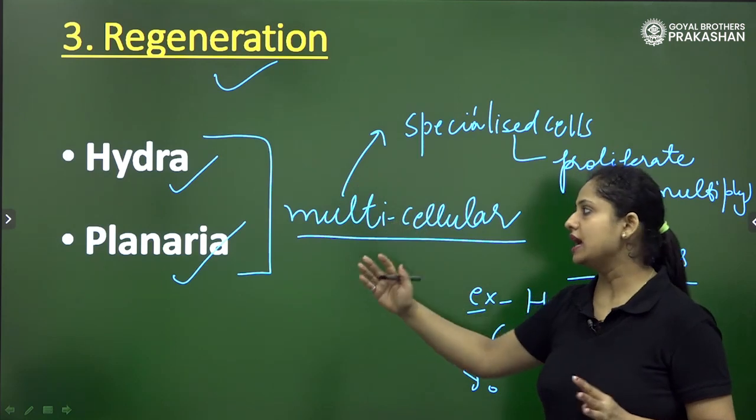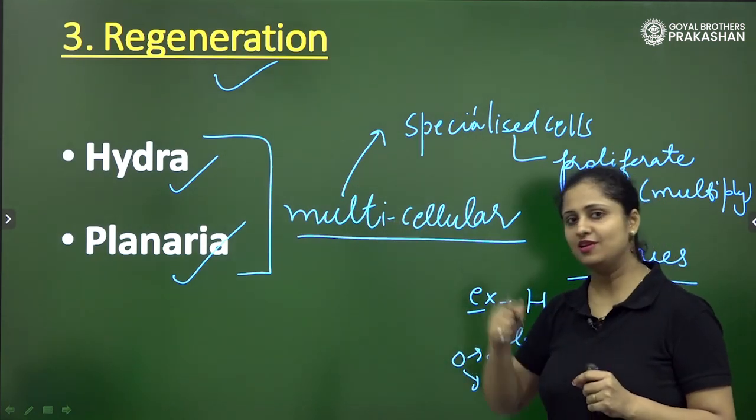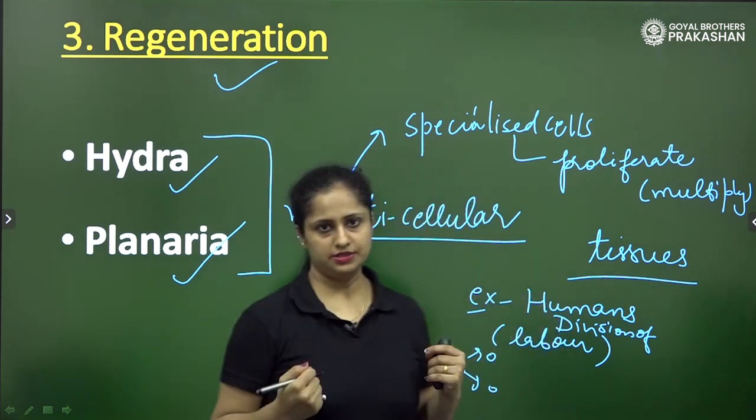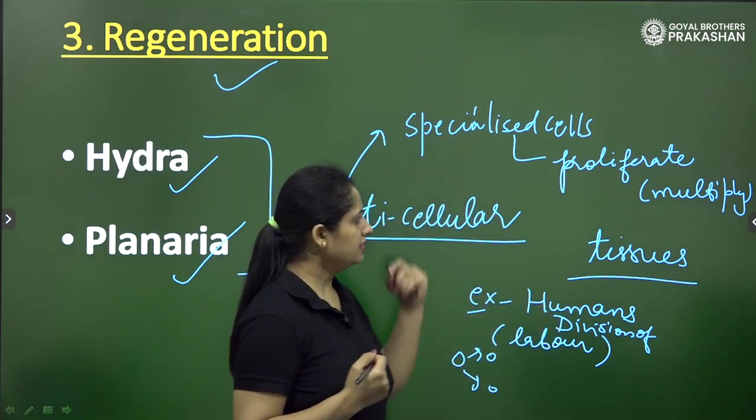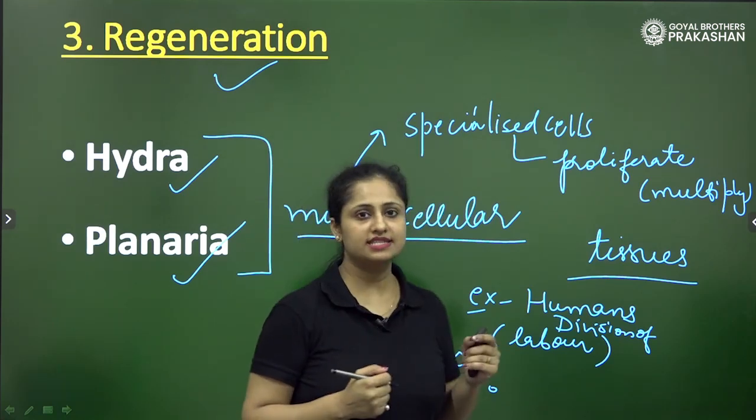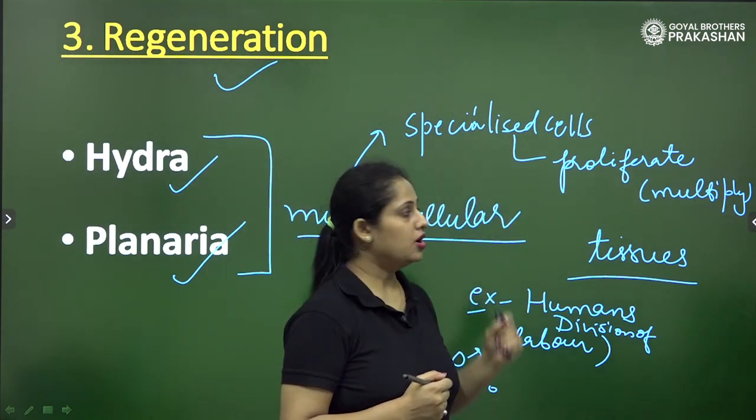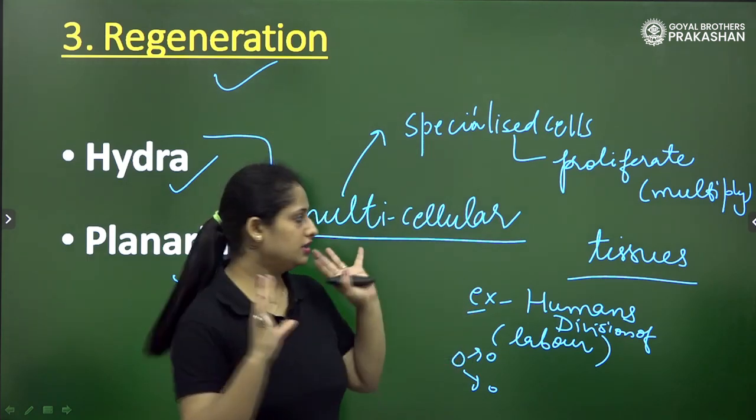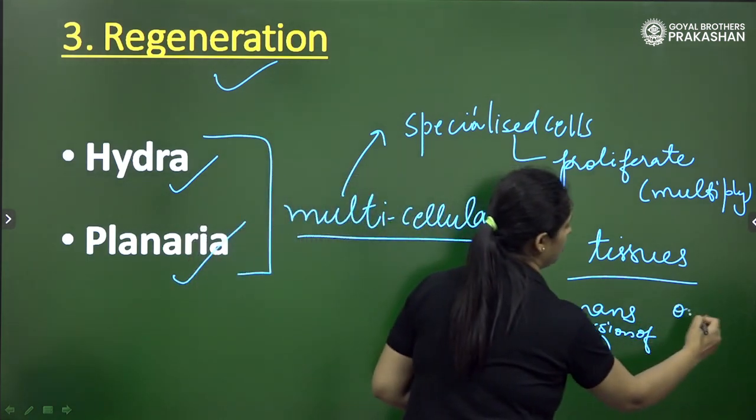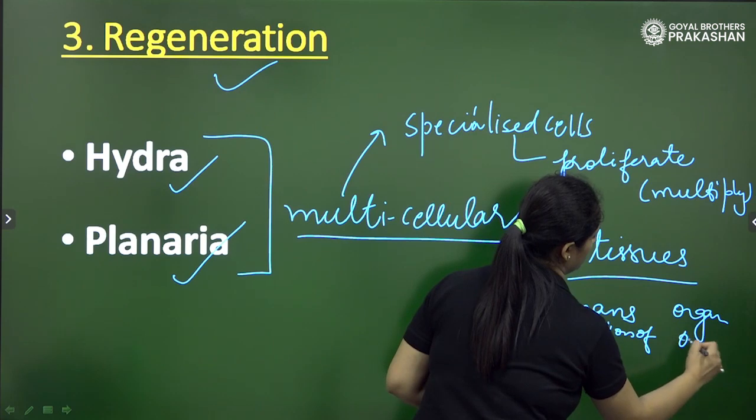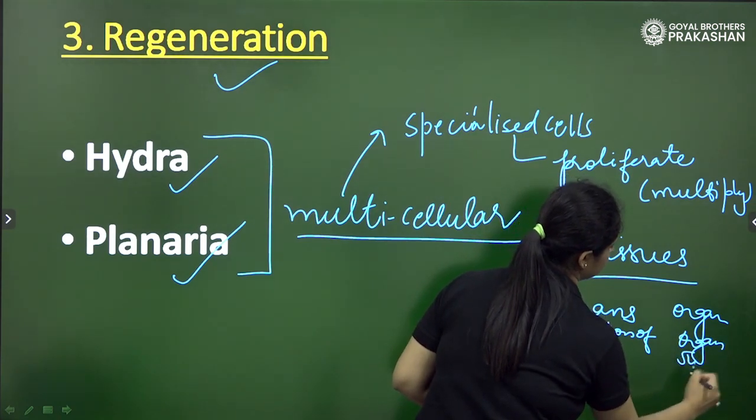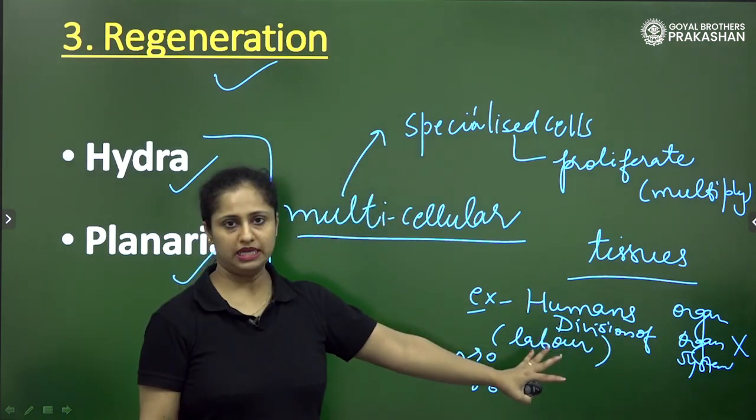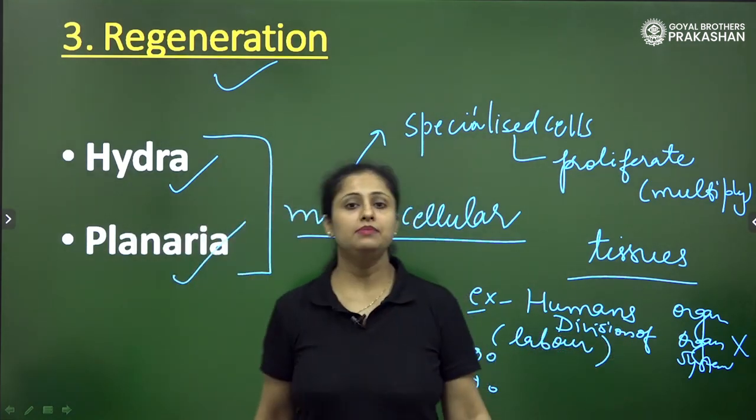But in hydra and planaria types of multicellular organisms this hierarchy is not followed. This is why in their body they have some specialized cells which proliferate or multiply to form tissues, but tissues are further not forming any organ or organ system. This is not happening in case of hydra and planaria.